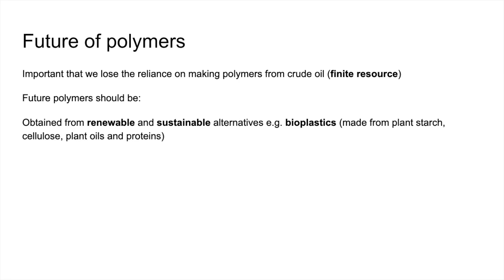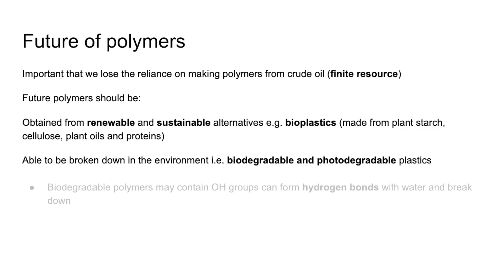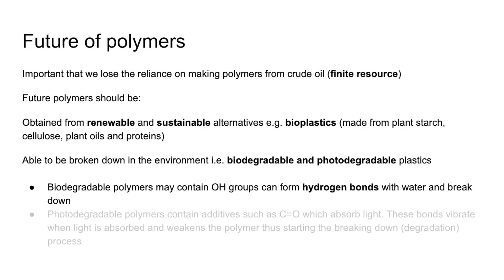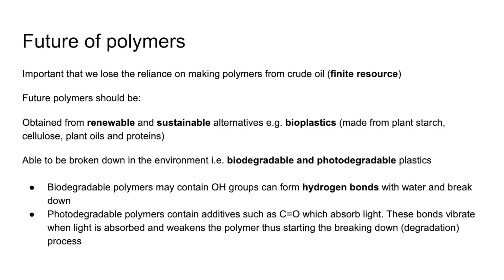They should also be able to be broken down in the environment, so we need to develop biodegradable and photodegradable plastics. Biodegradable polymers may contain an OH group, and that can form hydrogen bonds with water, which helps it break down. Photodegradable polymers contain additives such as carbonyl groups which can absorb light. When they absorb the light, the bonds vibrate and that weakens the polymer and helps it start to break down.